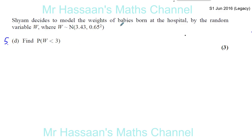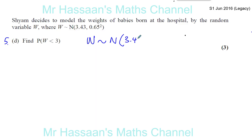Cheyenne decides to model the weights of babies born at the hospital by the random variable W, where W is normally distributed with a mean of 3.43 and a standard deviation of 0.65. So the weights are normally distributed — the first number is the mean and 0.65 is the standard deviation.